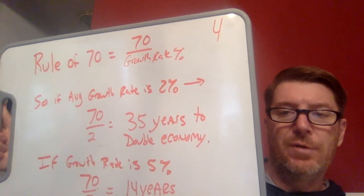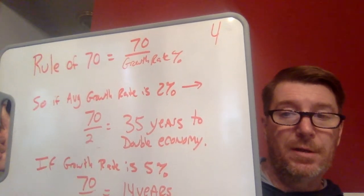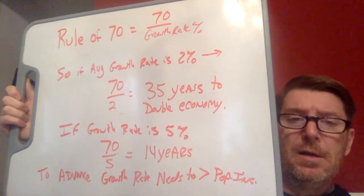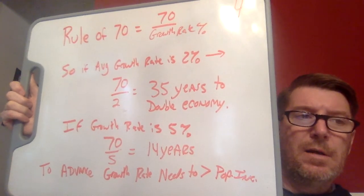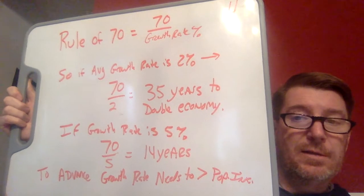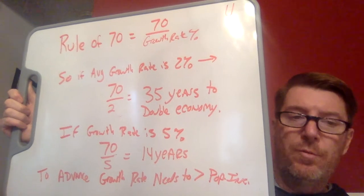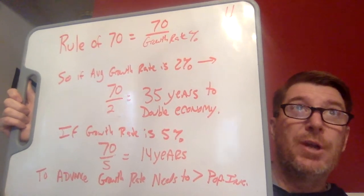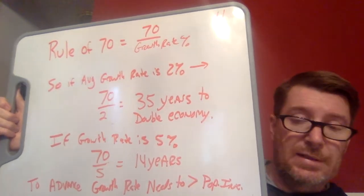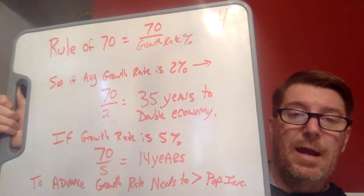Once you know how long it takes to double your economy, you compare that to how long it takes for your population to double. For example, if your growth rate were 5% instead of 2% — only 3% higher — it would only take 14 years to double your economy instead of 35. Even small differences in the average growth rate can make a huge change in terms of how quickly you achieve more growth and betterment in healthcare and society.